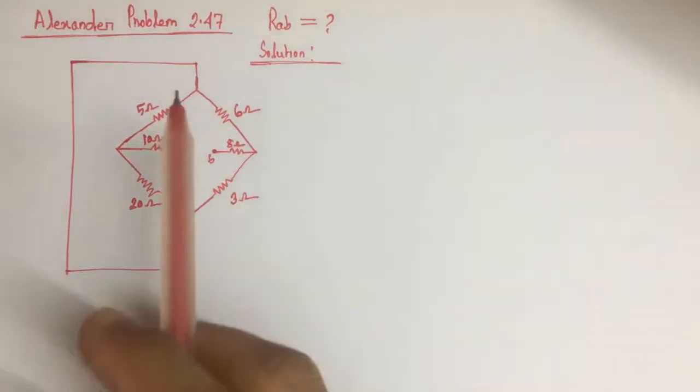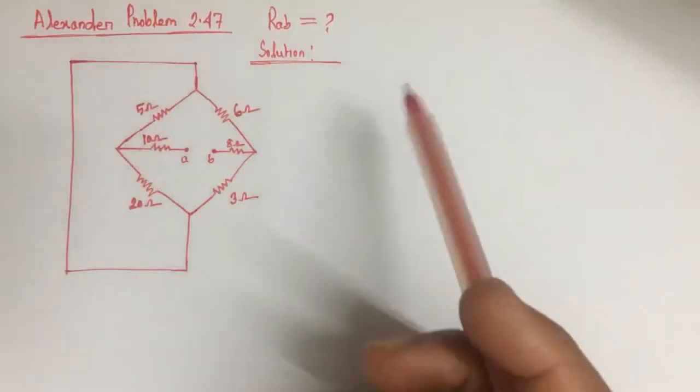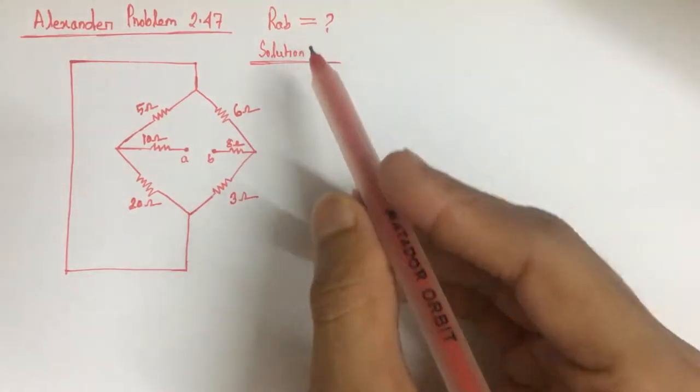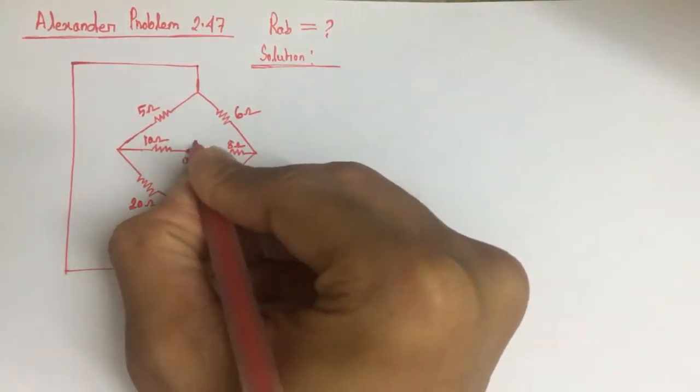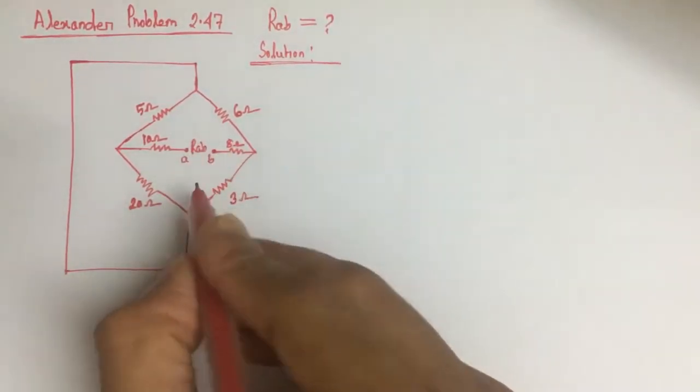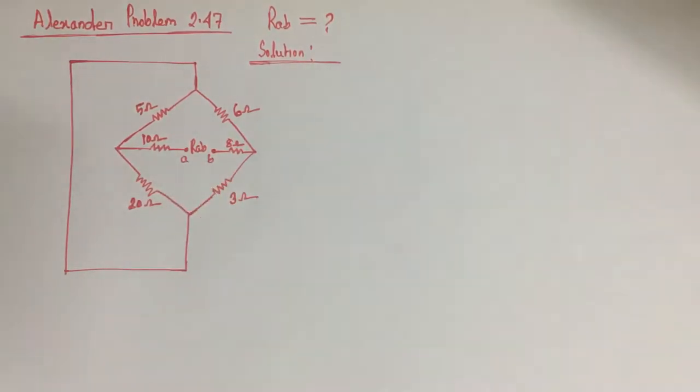Hi viewers, today we will solve problem 2.47 from Alexander. Here we have to identify RAB, which is the equivalent resistance between these two points A and B.